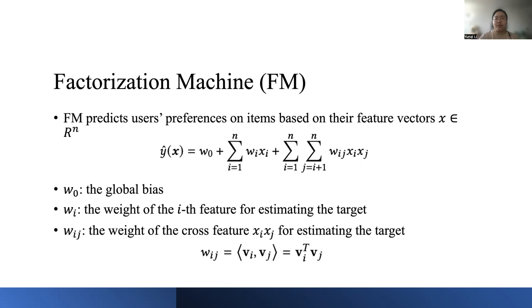In this equation, the W_0 models the global bias, W_i models the first-order feature and denotes the weight of the i-th feature for estimating the target. W_ij models the second-order feature interaction between feature i and j. It denotes the weight of the cross-feature x_i x_j for estimating the target. x_i here is the i-th feature of x and y hat is the predicted rating for x.